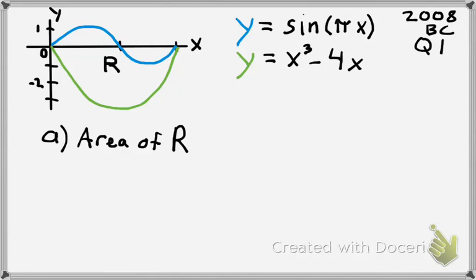Basically, they're asking for the area between the two curves. The first curve, y, is the sine of pi x, which is shown on the graph. And the green is x cubed minus 4x. The AP test is asking for the first part, which is the area of r. R is in between the two curves, the shaded region that I put in highlighter.